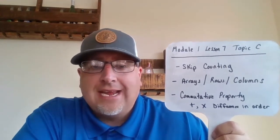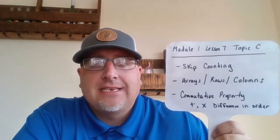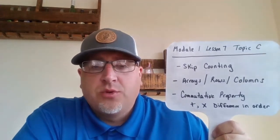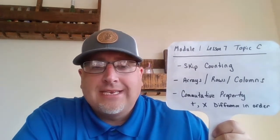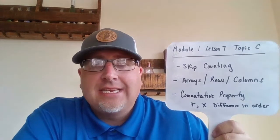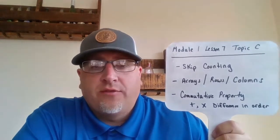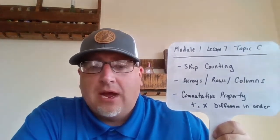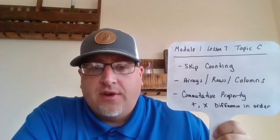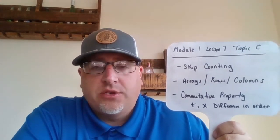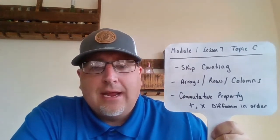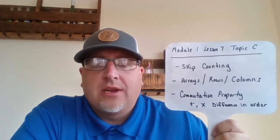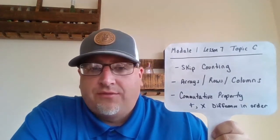Two, four, six, eight, ten, twelve, fourteen, sixteen, eighteen, twenty — got to be able to go by twos. Three, six, nine, twelve, fifteen, eighteen, twenty-one, twenty-four. If you're good at understanding skip counting, multiplication comes very, very easy to you. So just think about that today. Maybe jot down some notes — counting by twos, counting by threes and stuff like that.